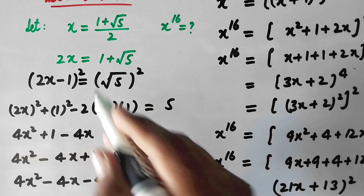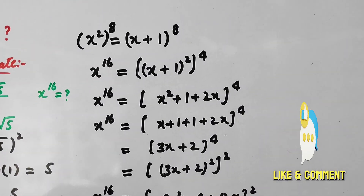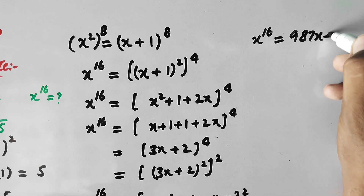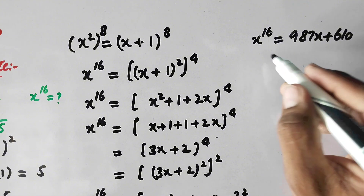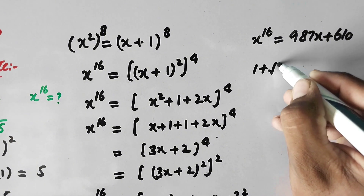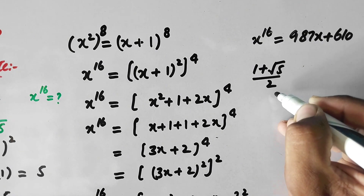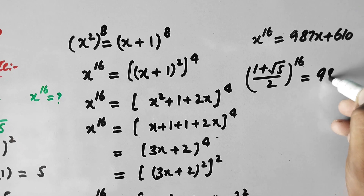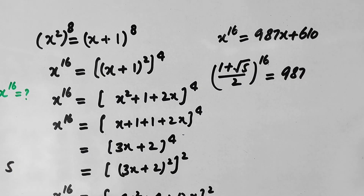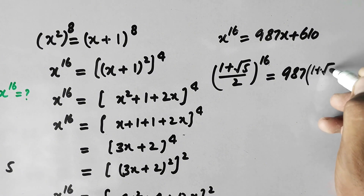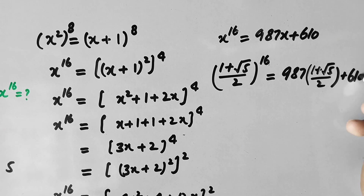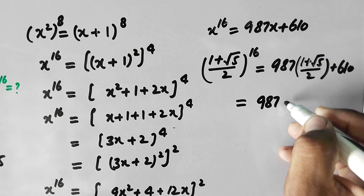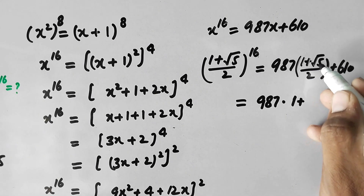Now we recall that we had assumed x equal to (1 plus square root of 5) over 2. So we have x to the power 16 equal to 987x plus 610. Substituting the value of x, we get 987 times (1 plus square root of 5) over 2, plus 610.